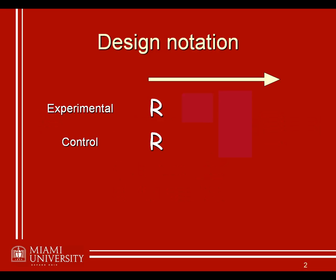In order to introduce these different types of designs, it's going to be very useful to use a common nomenclature or design notation. Typically, this is done by using specific symbols that represent the different things that we do over the course of a research study.